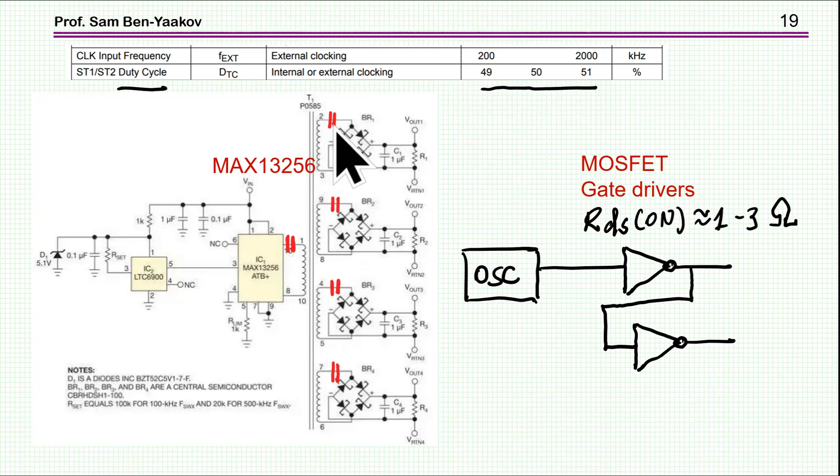I highly recommend to put capacitors here on the secondary. This is to avoid the situation that when the duty cycle is not exactly 50%, you'll have a DC current at the secondary. By having this capacitor, you'll be blocking them.